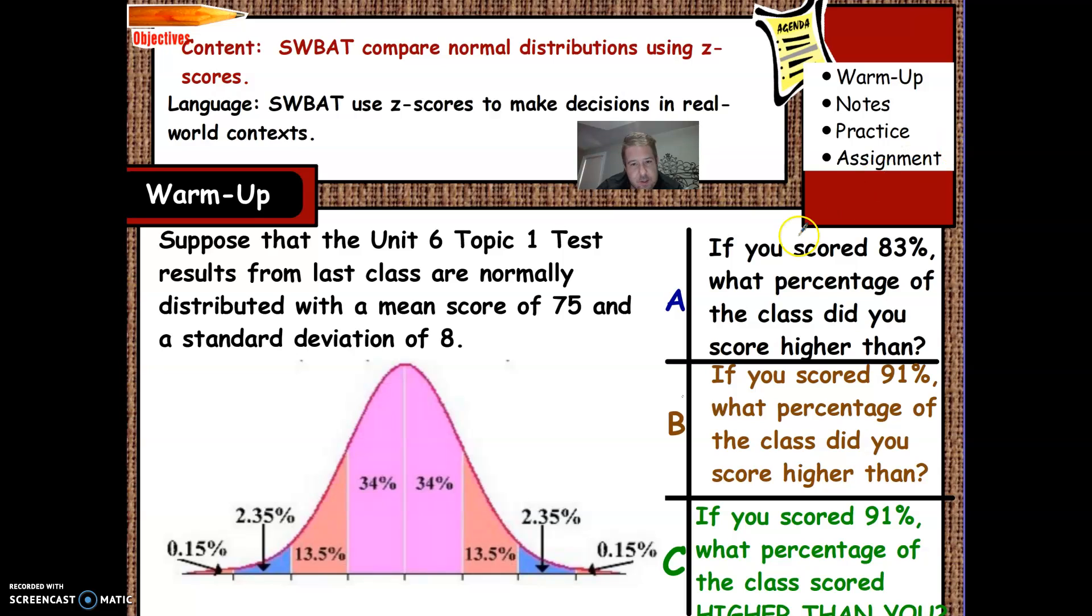So we're talking about Z-scores now. We have our normal distribution, which we've been seeing this empirical rule data before. We're being told that the average score was 75, so I'm going to put 75 right here in the middle.